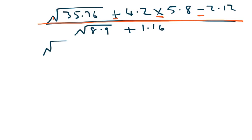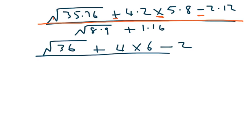So, again, I write down 36, the square root of 36, plus 4, multiplied by 6, minus 2. I'm just doing the first part. Divided by the square root of 9, plus 1. Never be afraid to have another line in and make it all clear.